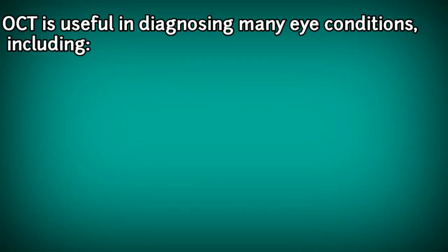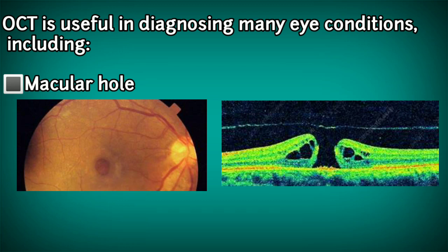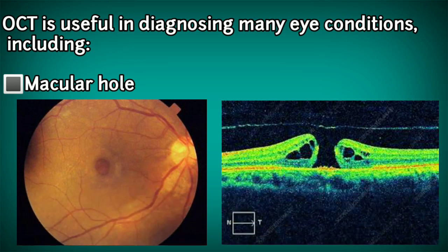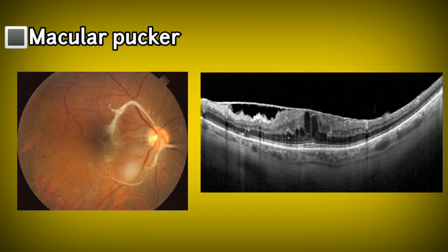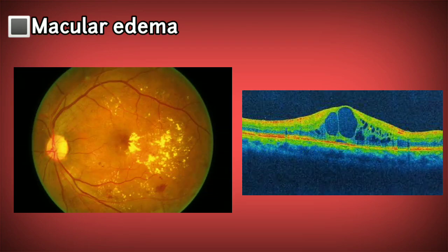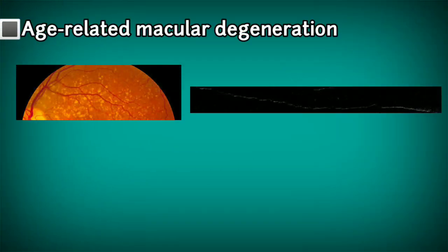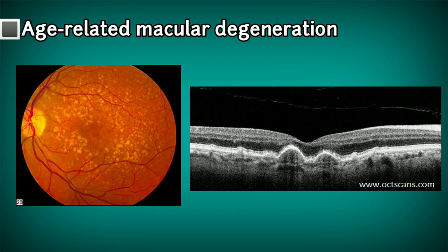The OCT is useful in diagnosing many eye conditions. The first one is macular hole. The second one is macular pucker. The third one is macular edema. The fourth one is age-related macular degeneration.